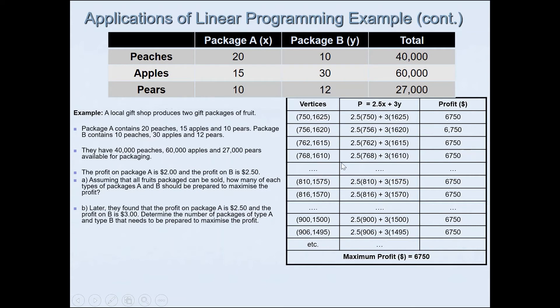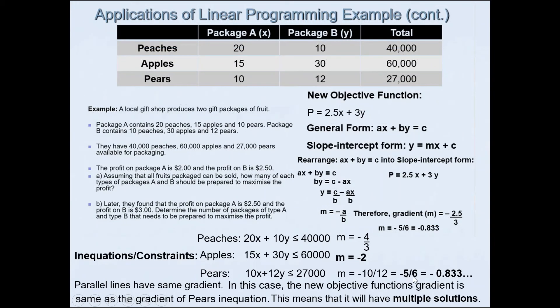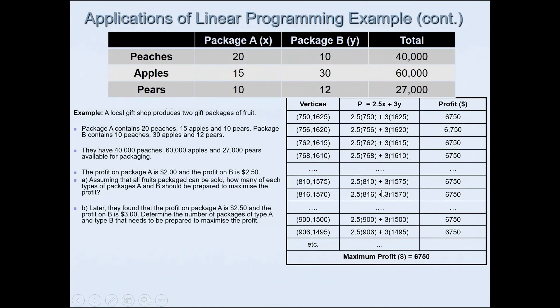Some of the possible values are when we have 750 with 1625. We already know the gradient value was negative 5 sixths. Now, if you want to interpret gradient, gradient is interpreted as rise over run. Run is the x value, rise value is the y value. It's change in y over change in x. If you look at this that way, you will know that if the x value increases by 6, the y value will go down by 5. You will see that pattern here in this table. If I increase the x value by 6, the y value will go down by 5 because it was negative 5 sixths as our gradient.